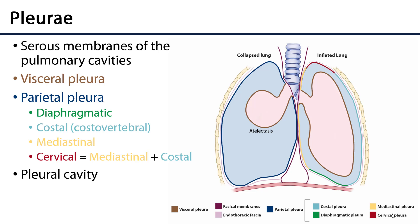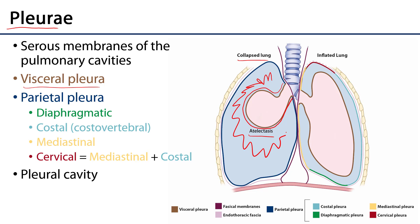To begin, pleuri is the plural of pleura. The pleura is a serous membrane lining a pulmonary cavity. The serous membrane has two distinct layers. There is the visceral pleura, which is adhered to the surface of the lung itself. This is an example of atelectasis or a collapsed lung, so we can see an exaggeration of the pleural cavity which is surrounding the visceral pleura adhered to the lung.